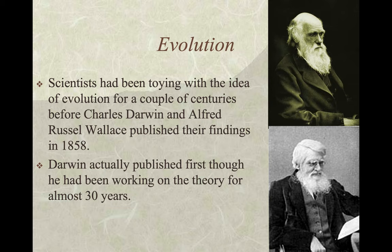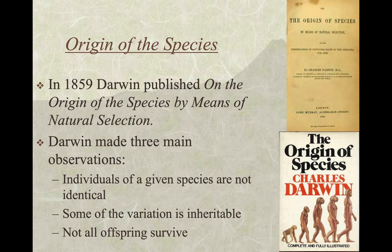Darwin was a very religious man, and he actually held on to his theories and writings for over 30 years. The only reason he published is because he heard that Alfred Russell Wallace was about to publish. Because of that, he hurried up and published — he was a relatively old man at the time and wanted to be the first. We don't talk about Alfred Russell Wallace; we just talk about Charles Darwin. In 1859, Darwin published 'On the Origin of Species by Means of Natural Selection.'